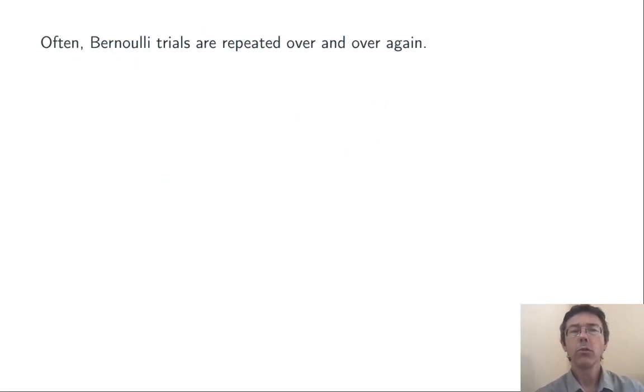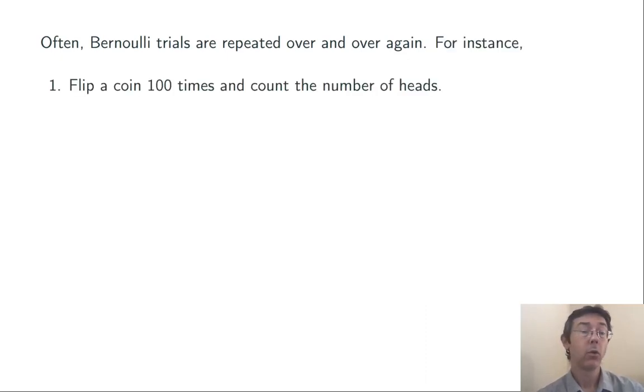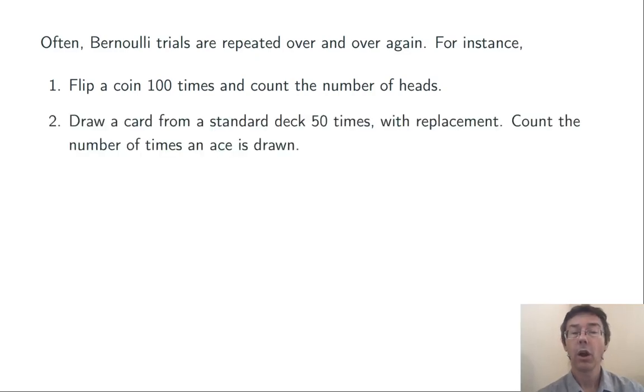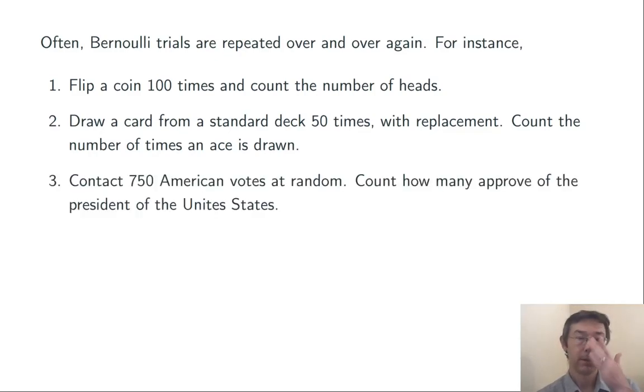Frequently, we do Bernoulli trials over and over and over again. For instance, flip a coin 100 times and count the number of heads. Draw a card from a standard deck 50 times with replacement and count the number of times an ace is drawn. Contact 750 American voters at random and count how many approve of the President of the United States.